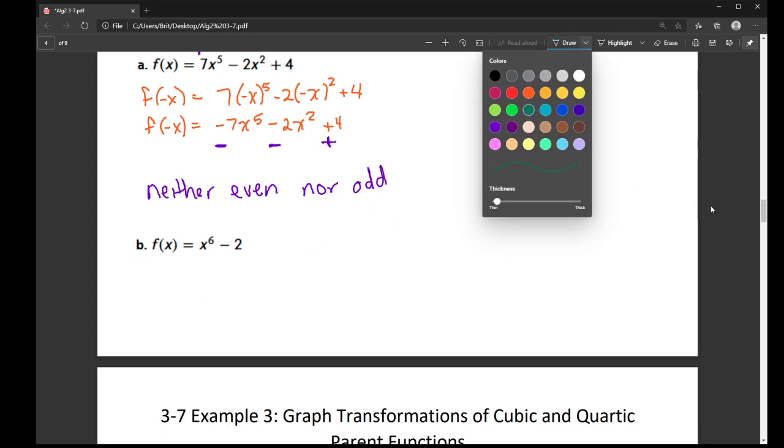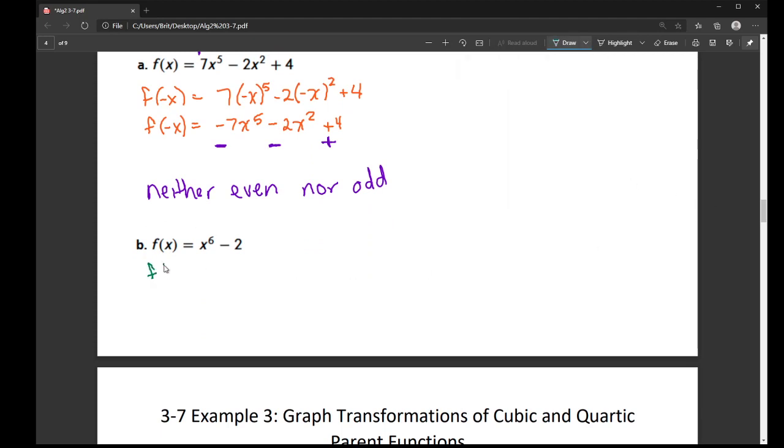Alright, and then part B here. So here's my negative x to the sixth. Now remember that even exponent means that this is going to come out positive. So I have x to the sixth, and then I have a minus 2.